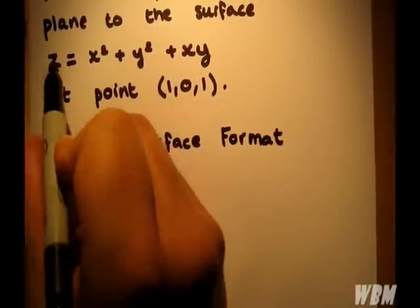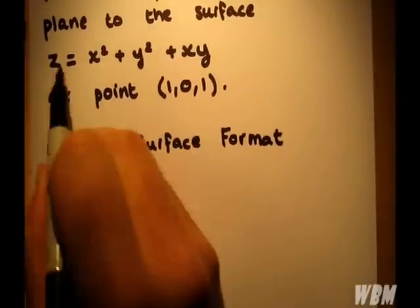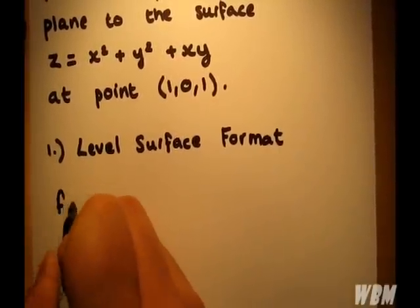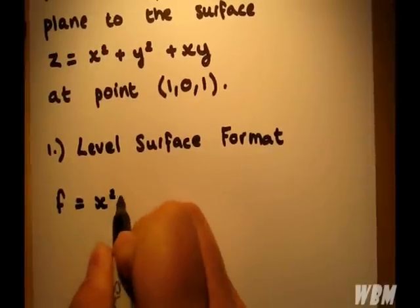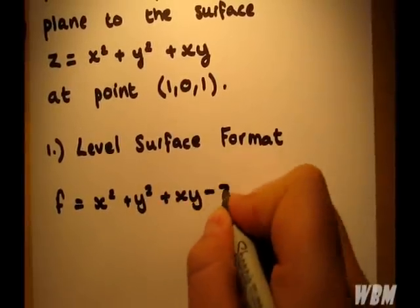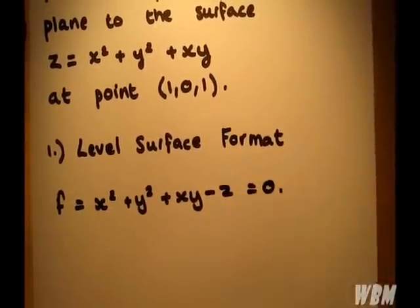And all we do is equate it to f and shift the z onto the other side, equate it to 0 as well. So we have f equals x squared plus y squared plus xy minus z equal to 0.